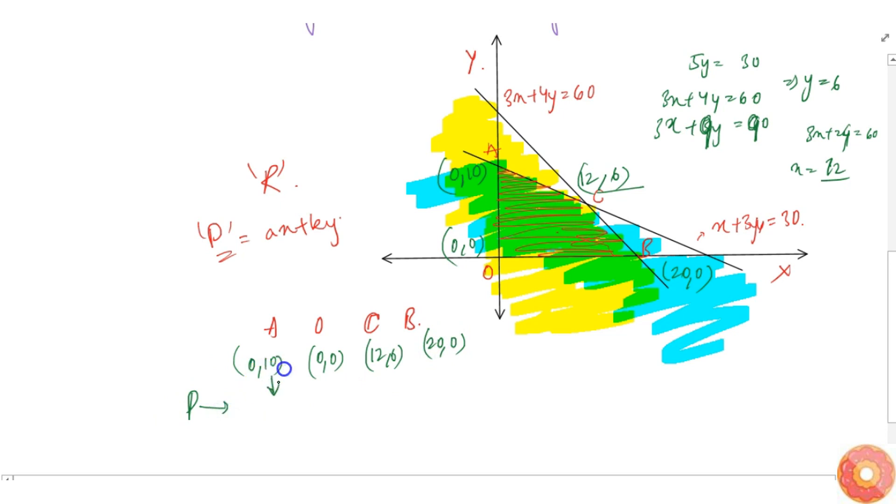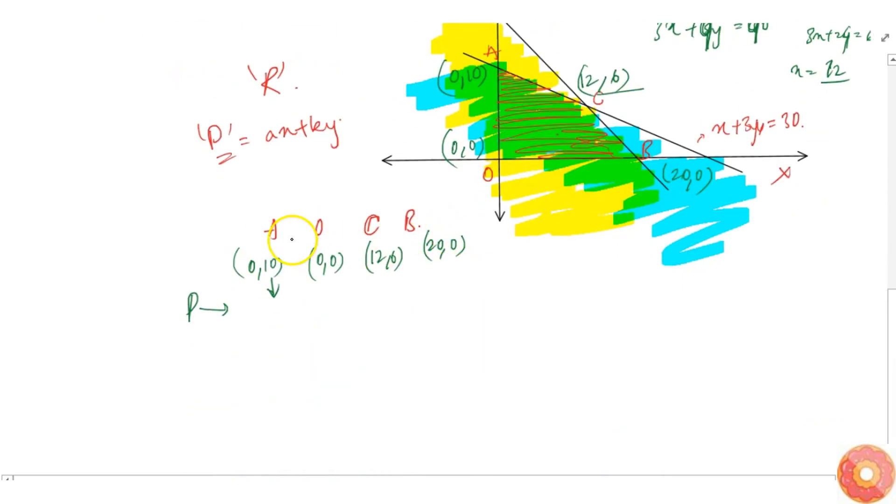At will be given as at this point what is the P. P is 8000X plus 12000Y so that is 12000 into 10 is one lakh 20,000. At 0 comma 0 it's 0. It's 12 comma 6 it's 1298,000 plus 72,000 this is simply thousand 72 plus 98 is 170 so 1 lakh 70,000.